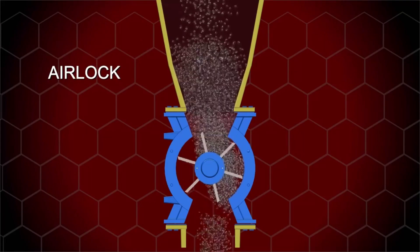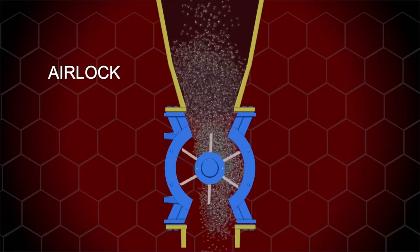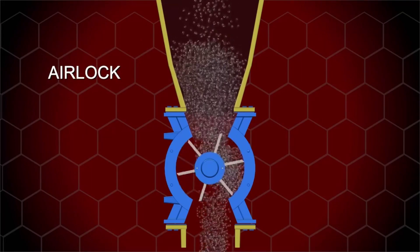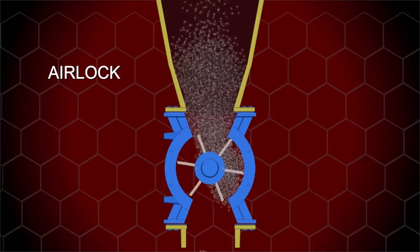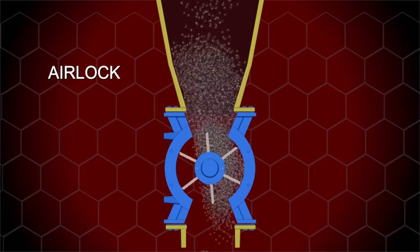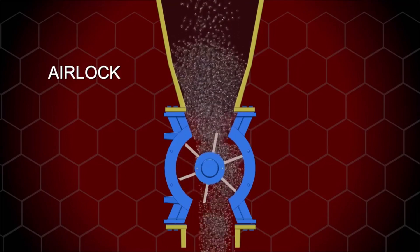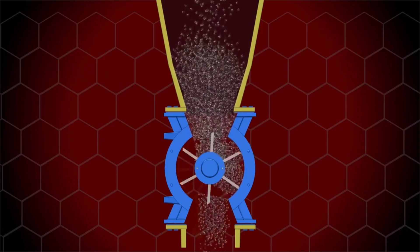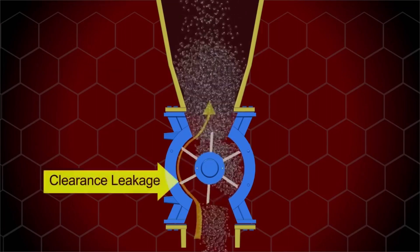The airlock provides a seal between two pressure zones above and below the valve. These can be positive, negative, or sometimes both. The primary concern is handling the pressure differential and minimizing leakage.